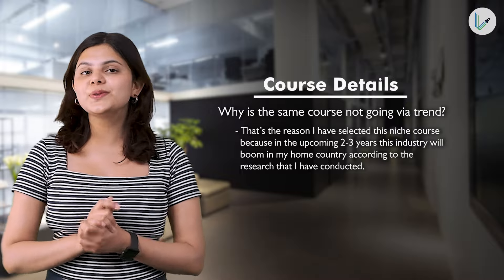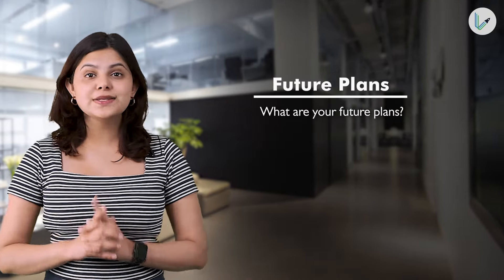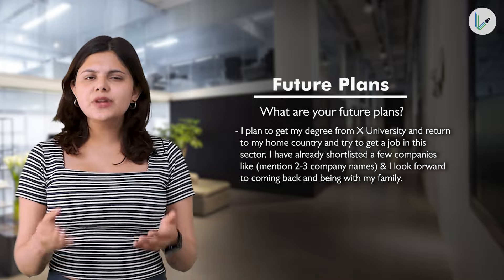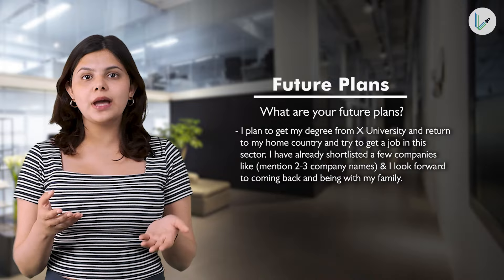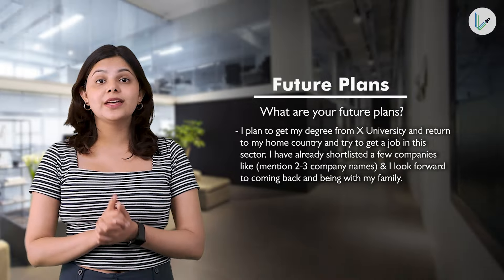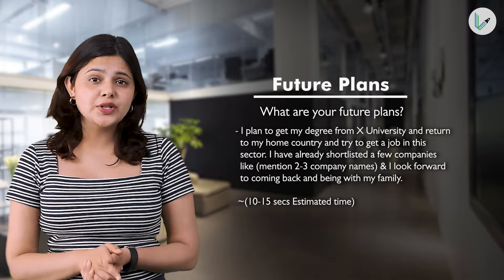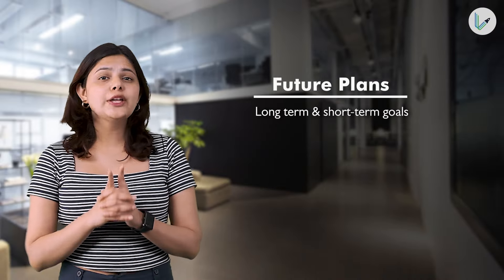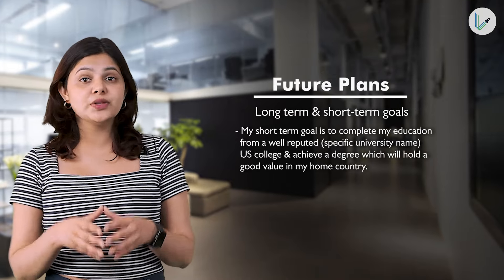For future plans, an ideal answer: 'I plan to get my degree from X university and return to my home country and try to get a job in the sector. I have already shortlisted a few companies — you can mention the company names — and I look forward to coming back and being with my family.' This should be answered within 15 seconds. A vague or incorrect answer: 'My plan is to graduate and get a job in the same field in the U.S. after completion of the program.'